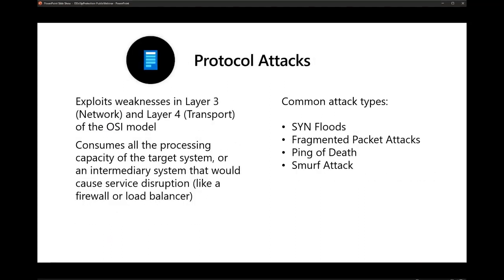The second type is protocol attacks. Protocol attacks cause service disruption by consuming all available capacity of web application servers or intermediate resources like firewalls and load balancers. They abuse the network layer using protocols like IP, ICMP, IPsec, and transport-layer flows like TCP. The most common example is a TCP SYN flood attack, which exploits the TCP handshake by sending a large number of TCP SYN packets with spoofed source IP addresses.